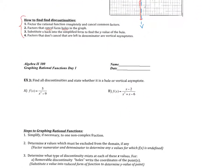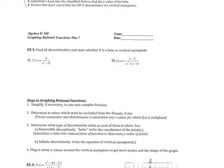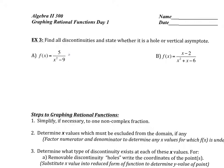Let's look at a few practice problems. We're going to identify all discontinuities and state whether each is a hole or a vertical asymptote. In the first example, we factor the denominator as a difference of squares: x minus 3 times x plus 3. We have discontinuities at x equals 3 and x equals negative 3. There's no factor in the numerator that cancels with the denominator, so we have no holes — but we do have vertical asymptotes at x equals 3 and x equals negative 3.